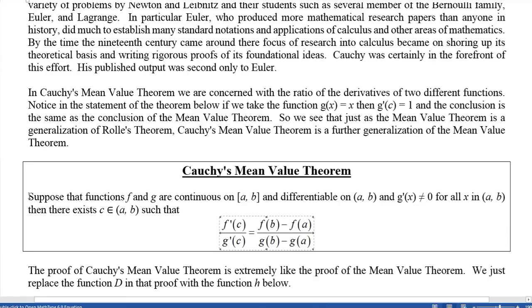And notice that the conditions here in the hypothesis are exactly the same: that f and g are continuous on the closed interval [a, b] and differentiable on the open interval (a, b). We do want to make sure we're not dividing by zero, so we'll make sure that g'(x) is not equal to zero for x in the interval (a, b), and it says then there exists a c in the interval such that this is true.